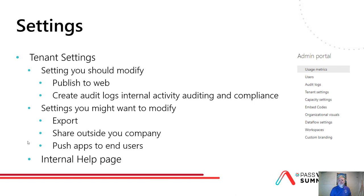The first part of monitoring I want to suggest is the tenant settings. You might be thinking — tenant settings, why should I monitor those? In the tenant settings, there are things you probably should be modifying, such as Publish to Web — hopefully that is turned off or at least set for only selective usage. You should also be turning on the audit logs if you haven't already done that, which can be done from Microsoft 365 security and compliance, or from Power BI itself.